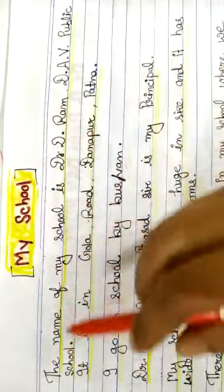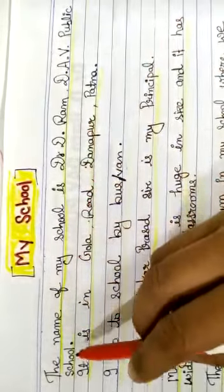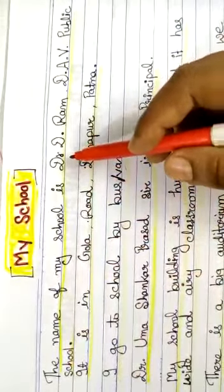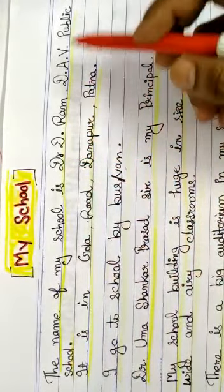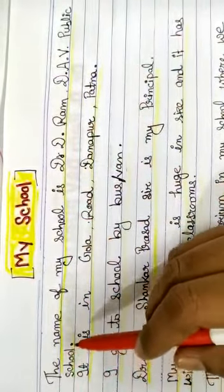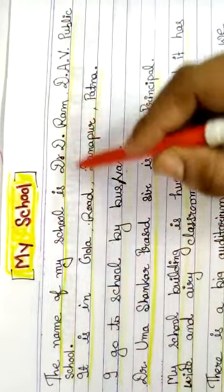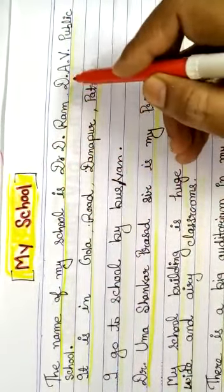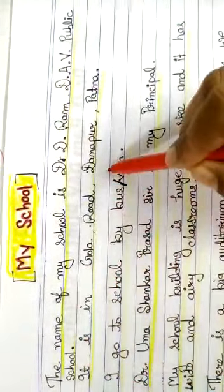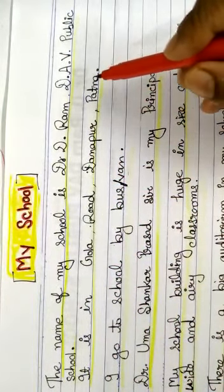First, you will write the name of your school. How will you write? 'The name of my school is Dr. D. Ram DAV Public School.' In short form it is better. You should also remember the full form: Dr. Dukhan Ram DAV Public School. Then you will write about the place also — it is in Gola Road, Danapur, Patna.